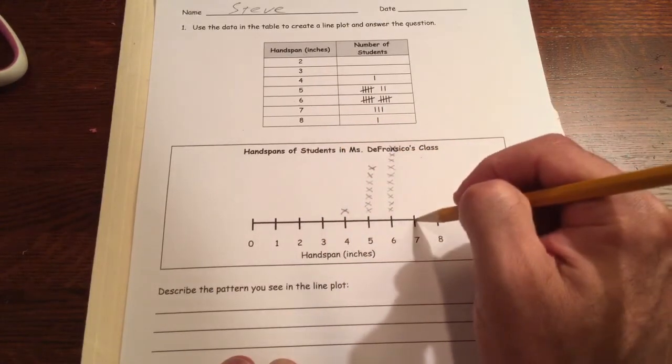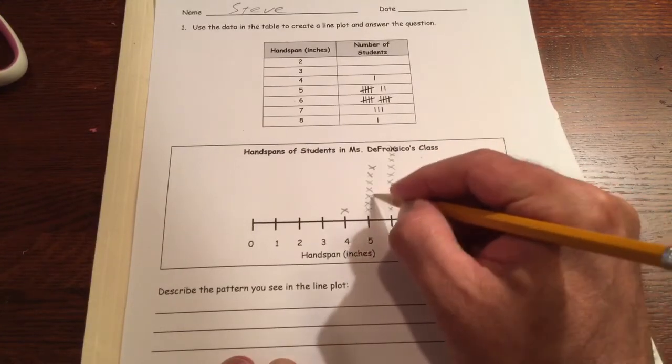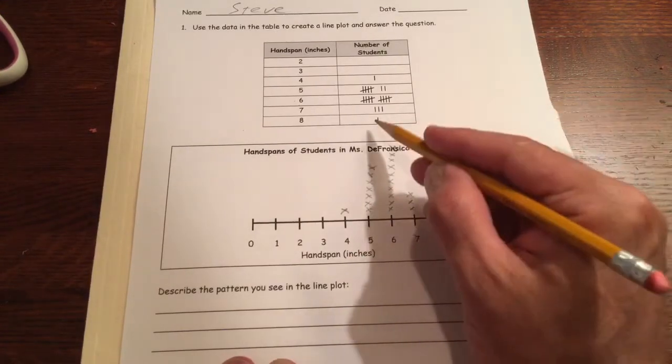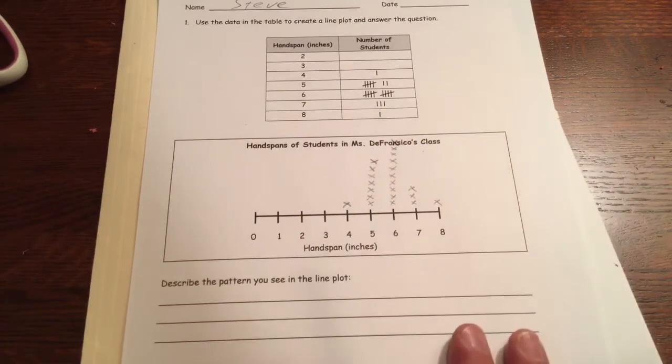For seven inch hand spans there are only three people. One, two, and the third row should be up here. And then eight, there's just one person. And there's our line plot.